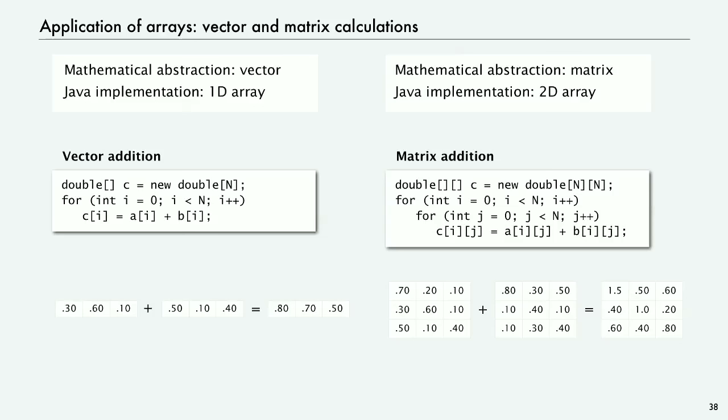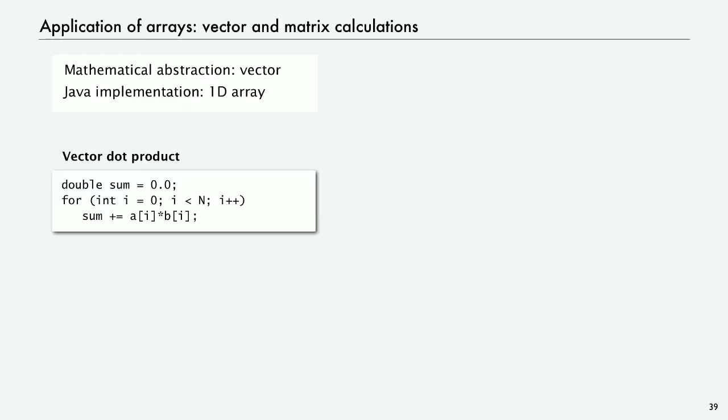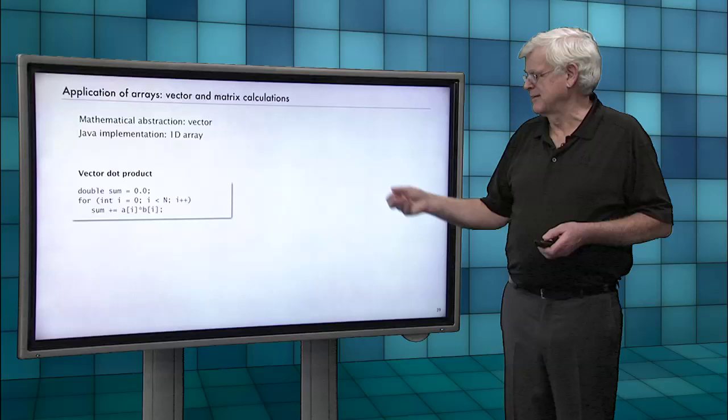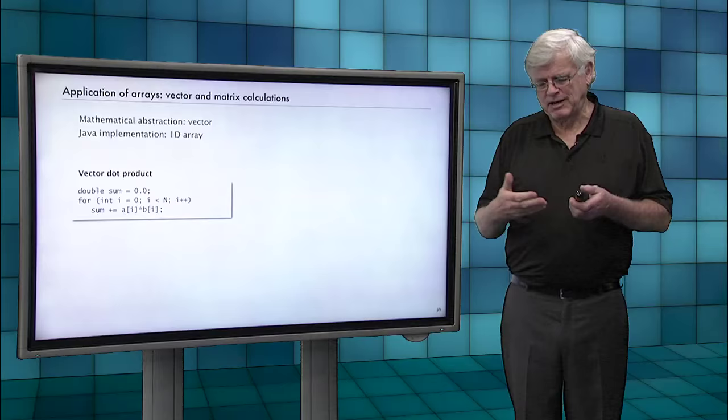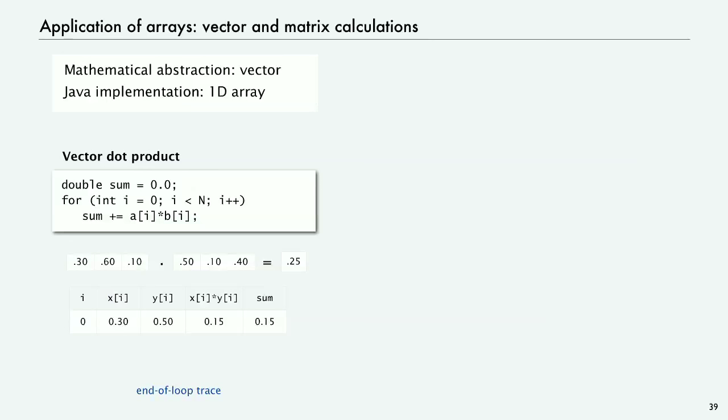With vectors and matrices, we have more complicated computation, like for vectors, the dot product, one-dimensional array. You multiply the corresponding entries and add them all up. So this is just a little trace for these two vectors, one-dimensional vectors. The first entry, zero, both of them, is X[i] is 0.3, Y[i] is 0.5. You multiply them together, you get 0.15. And then do that for one, you get 0.06, and you add it to the sum. And then the third one, you add it. And so the dot product of those two vectors is 0.25. And you get that for vectors with a single for loop.